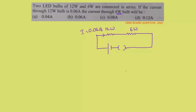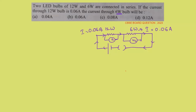We are asked to find the current through the 6 watt bulb. In a series circuit, the same current flows through the whole circuit. So if the current through the 12 watt bulb is 0.06 ampere, the current through the 6 watt bulb is also 0.06 ampere. However, the voltage across both resistors will be different — in a series circuit, current remains the same but voltage across each resistor varies.